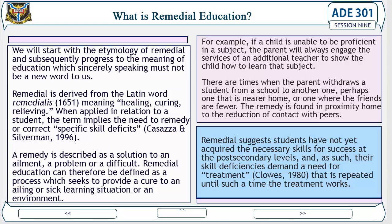Remedial education can therefore be defined as a process which seeks to provide a cure to an ailing or sick learning situation or environment. For example, if a child is unable to be proficient in a subject, the parents will engage the services of an additional teacher. There are times when the parents withdraw a student from one school to another, perhaps one that is nearer home or where friends are fewer — the remedy is found in proximity and the reduction of contact with peers. Remedial suggests students have not yet acquired the necessary skills for success at the post-secondary level, and their skill deficiencies demand a need for treatment — Close, 1980 — repeated until such a time the treatment works.